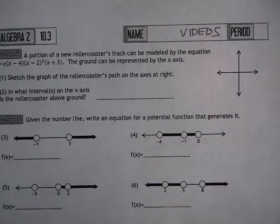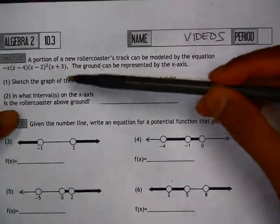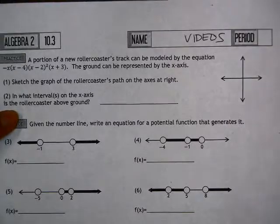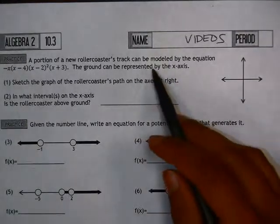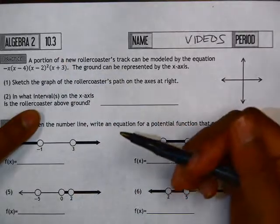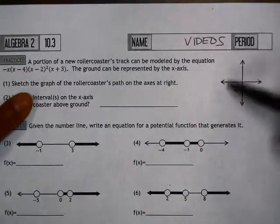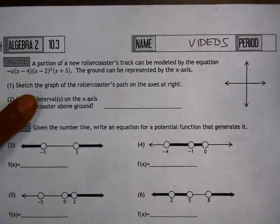Okay, this is worksheet 10.3 and we're graphing polynomials. In numbers one and two, we're given an equation and we're told that the ground can be represented by the x-axis. The equation represents a new rollercoaster's track, so the first thing we do is sketch a graph of the rollercoaster's path on this axis.